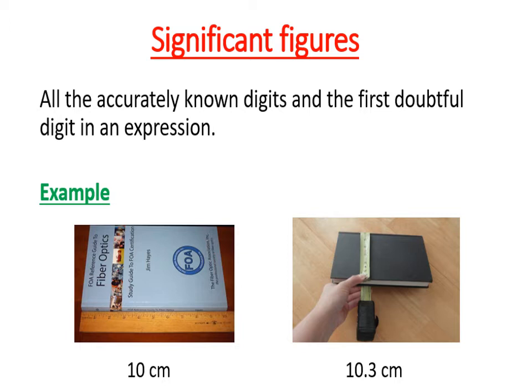I am giving you an example. We divide the class into two groups and say that you have to measure the length of one book, but we have given them different instruments — one group has a meter rod and one group has a tape. The meter rod group says the length is 10 cm.